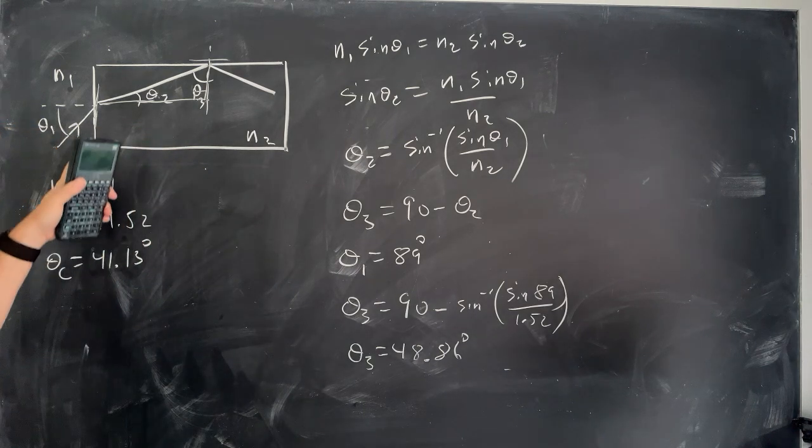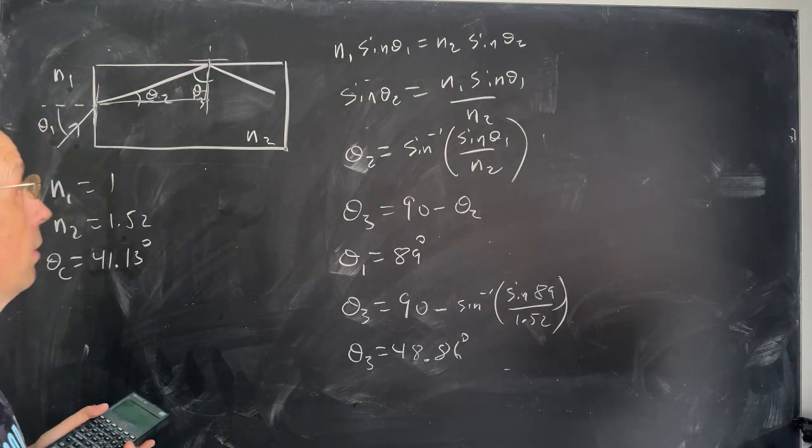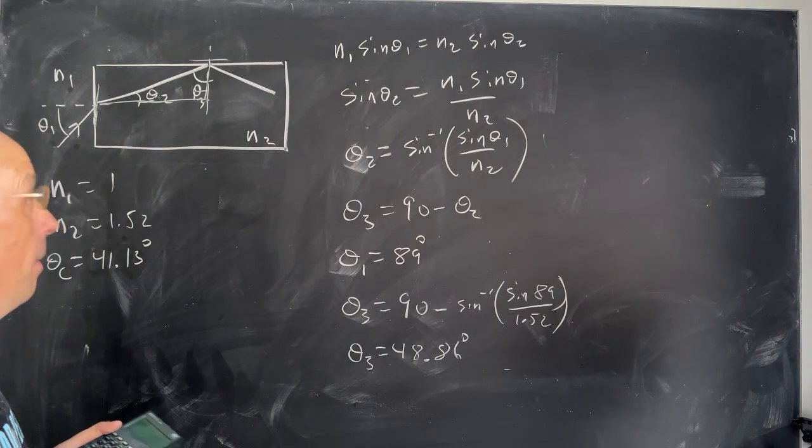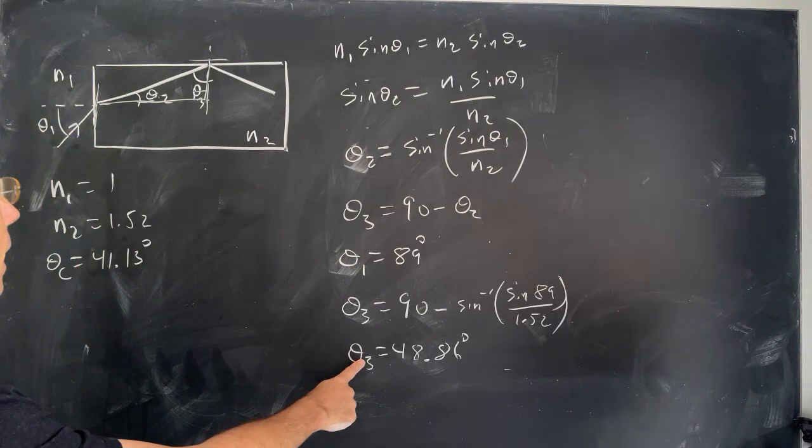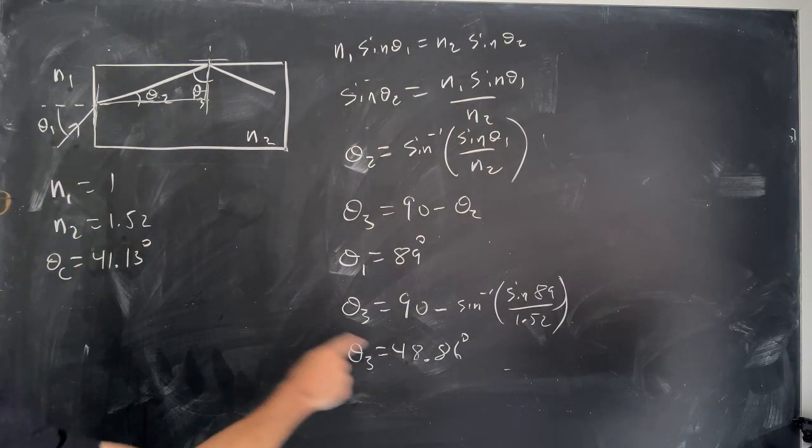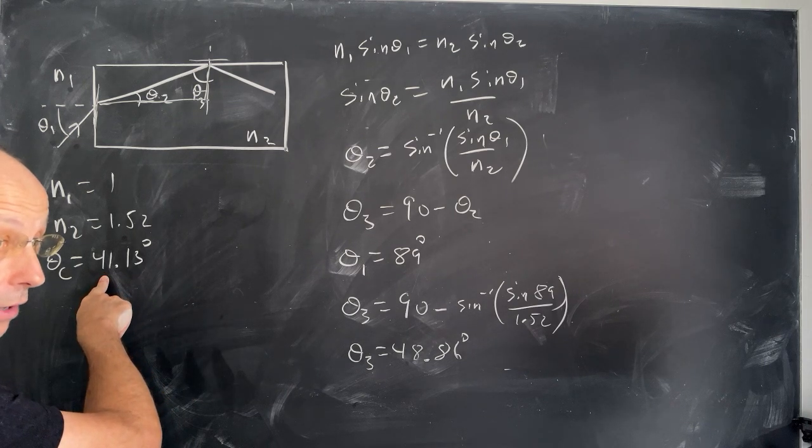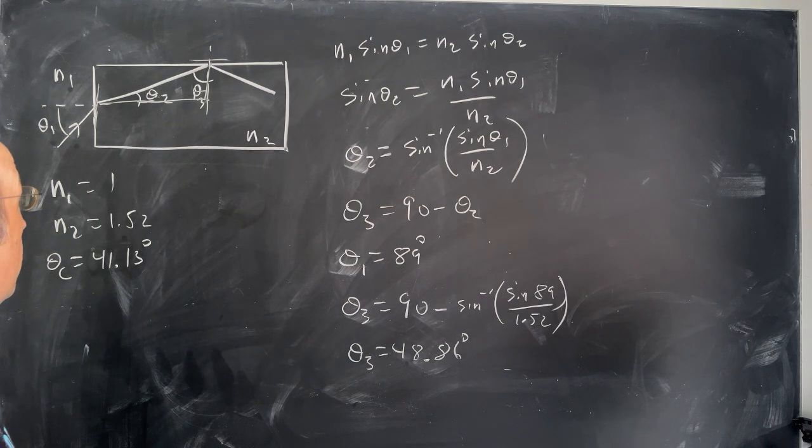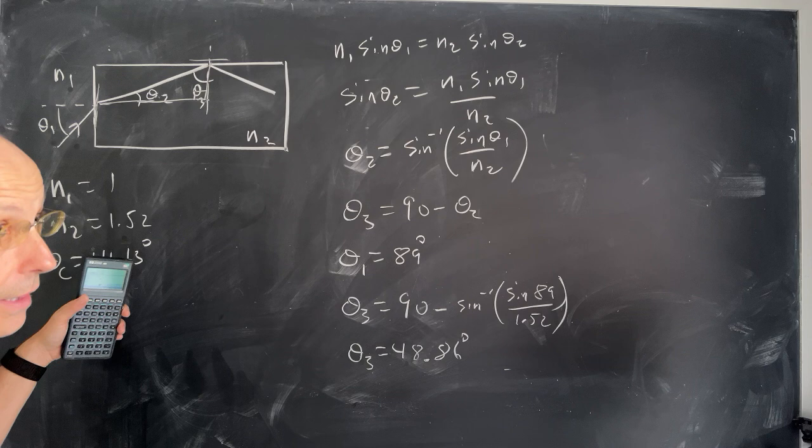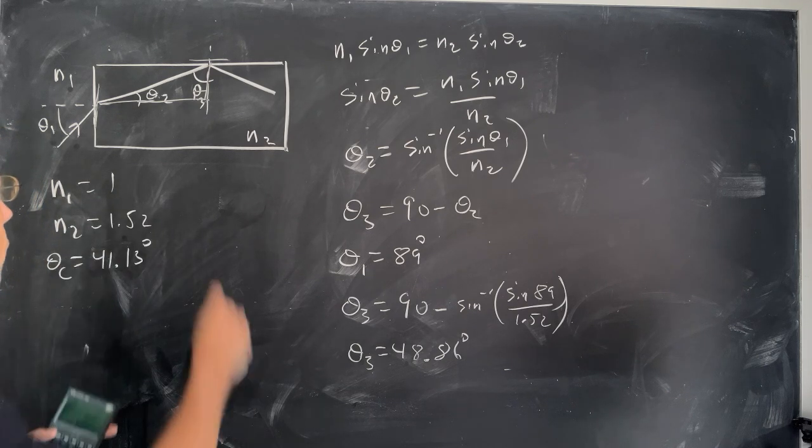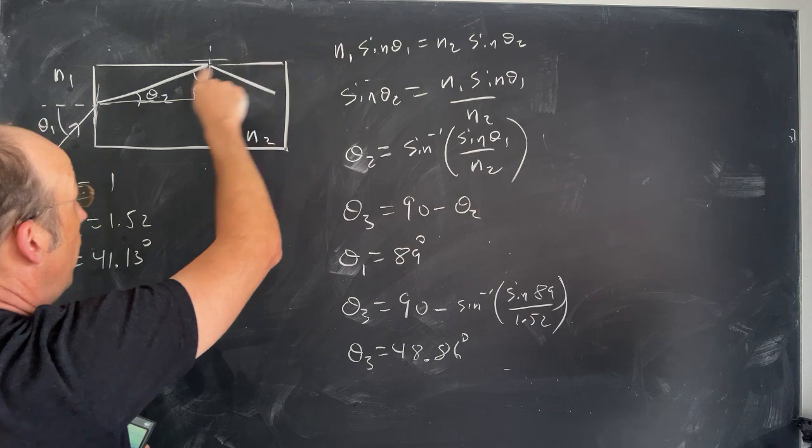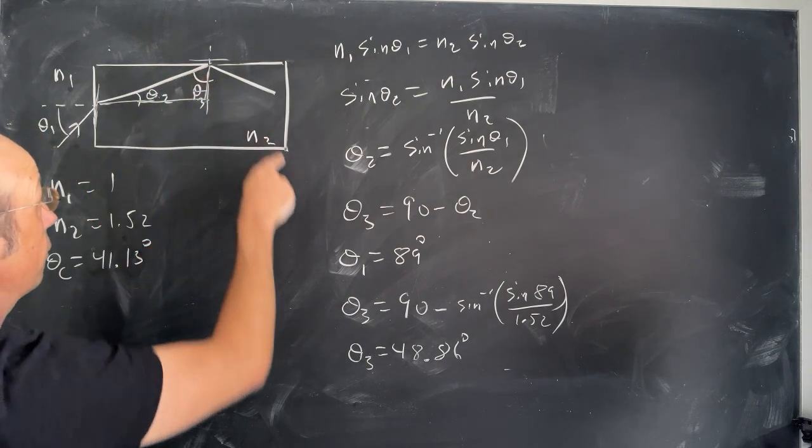And I get 48.86 degrees. Okay. So at that giant angle, 89 degrees, which is anything greater, it's not going to even enter the block. I get theta 3 is 48.3. And remember, the critical angle is 41.3. So anything greater than that is going to reflect back in. At 41.3, it reflects right along that way. So if I'm at a greater angle, it's going to reflect down.